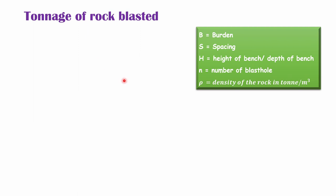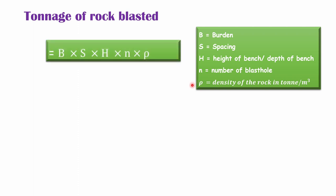Now we have one more parameter, that is the density of the rock. If we have the density of the rock, then we can calculate the tonnage of rock blasted. So the tonnage of rock blasted equals burden multiplied by spacing, multiplied by depth, multiplied by number of blast holes, multiplied by the density of the rock.